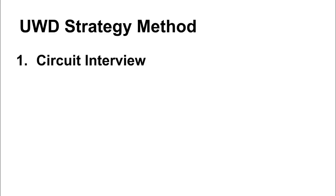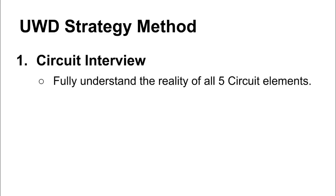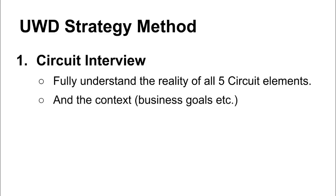The strategy phase has two parts. It starts with the circuit interview, where we ask a bunch of questions so that we completely and fully understand the reality — the truth, the situation as it actually is right now. We do that by looking at all five key circuit elements and the context of the business, but in particular where does the business want to go and what does it want to achieve. There's no point suggesting something if it's not part of their passion.